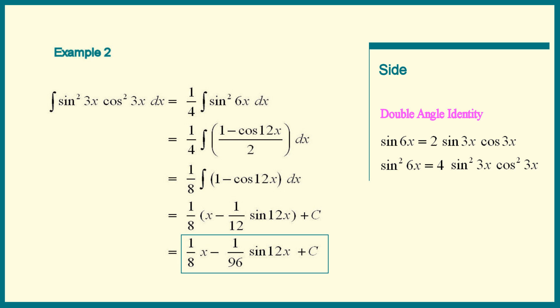Can we picture in our mind what happens if the sine and cosine were each raised to a fourth power? That fraction 1 minus cosine 12x over 2 would have to be squared. That expands into three terms with a cosine squared of 12x.